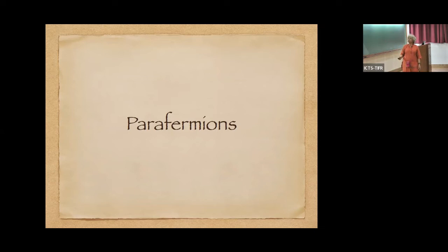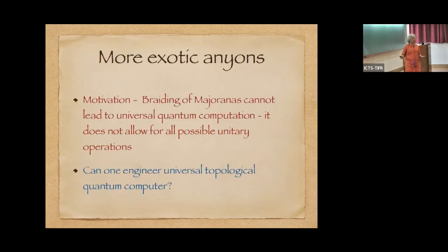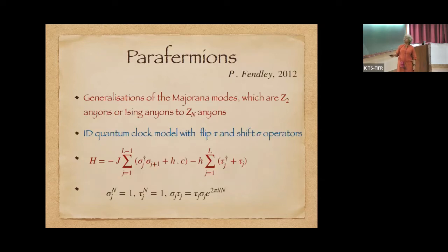What is the motivation for going on to parafermions when even Majoranas have not yet been seen? The point is Majoranas cannot, even if we could find Majoranas and braid them, they will never lead to universal quantum computation because all kinds of unitary transformations are not possible by braiding Majoranas. So the aim, the holy grail is of course to engineer universal topological quantum computer. Even parafermions cannot do it, but it can produce more gates than Majoranas. So the next step forward is parafermions.